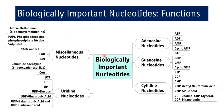Coming to the biologically important nucleotides — there are four main ones: adenosine nucleotide, guanosine nucleotide, cytidine nucleotide, and uridine nucleotide. There are also other nucleotides which have biologically important functions. We will go through them one by one.